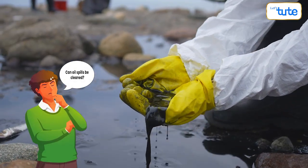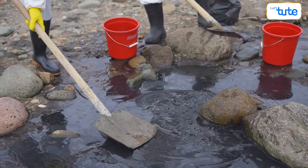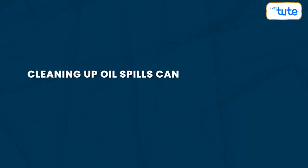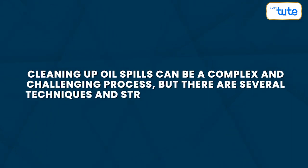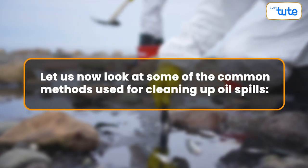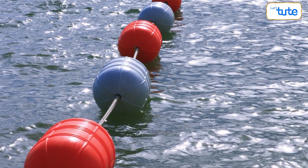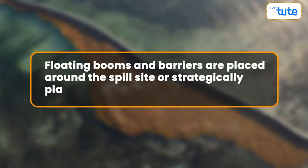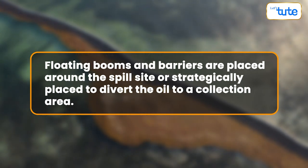John is now clear on the causes and harmful effects of oil pollution. He started thinking — we cannot leave this spilled oil the way it is, something needs to be done to clear this up. Yes, these oil spills have to be cleaned up, and this is not an easy task. Cleaning up oil spills can be a complex and challenging process, but there are several techniques and strategies that can be used to minimize the environmental impact. Let us look at some common methods. Containment — as the name suggests, this technique aims to contain the oil in a specific area and prevent it from spreading further. Floating booms and barriers are placed around the spill site, or strategies are used to divert the oil to a collection area.